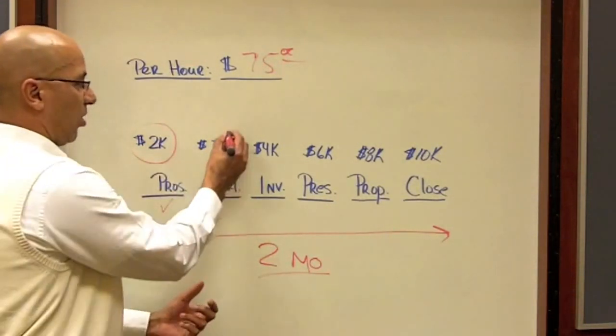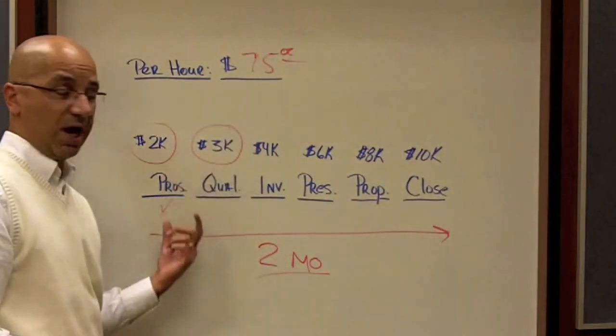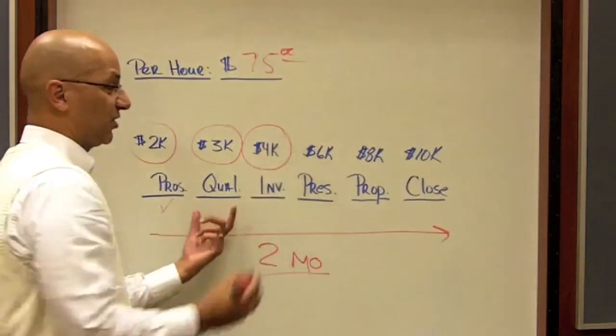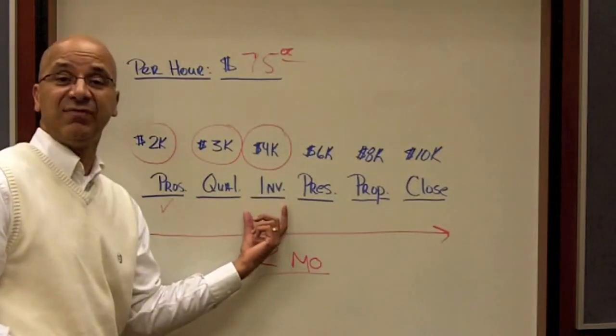When I move the client over to the qualification stage, my cost has now gone up to $3,000. Why? Because I've invested more time in that client. Then it goes up to $4,000 because after the qualification phase maybe I have an investigative phase where I actually go to the customer premise.